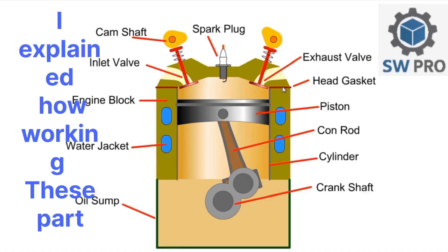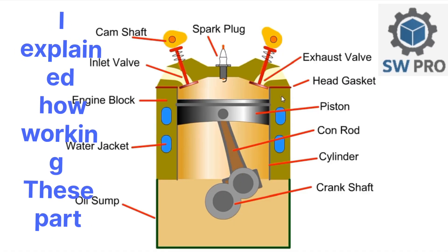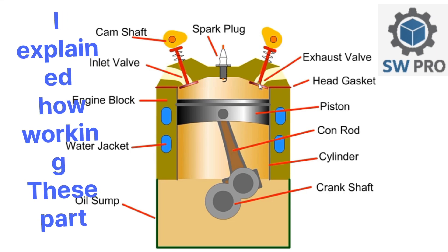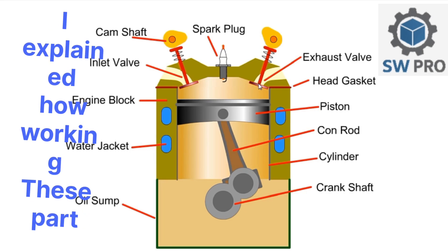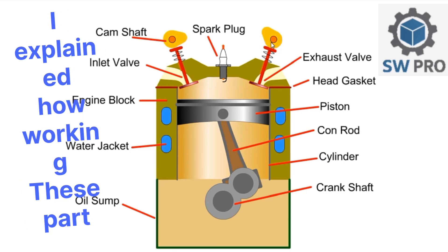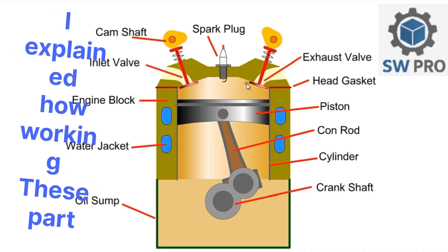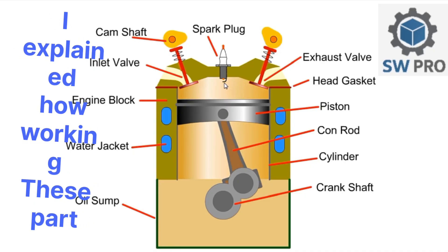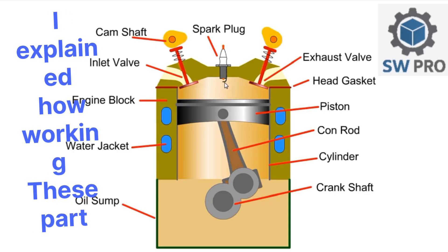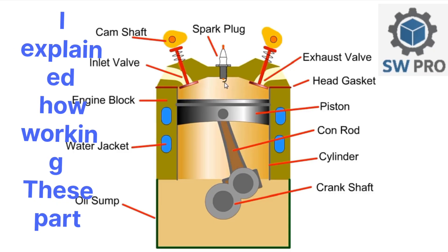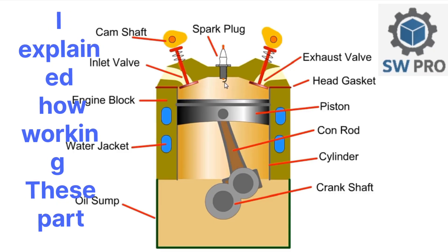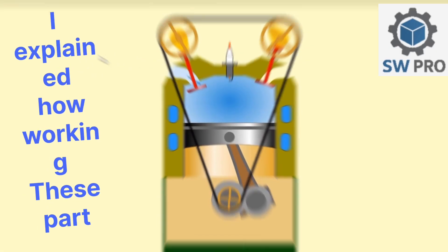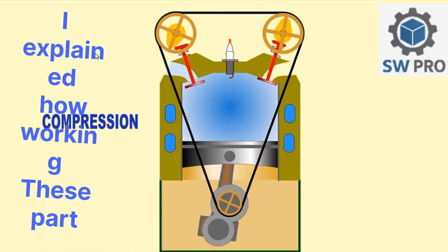At the top is the head gasket, which provides a seal between the block and the cylinder head. The exhaust valve is also controlled by a camshaft and allows the waste gas to exit from the cylinder. Finally, at the tip of the spark plug, the high voltage electricity jumps across the gap and ignites the fuel.